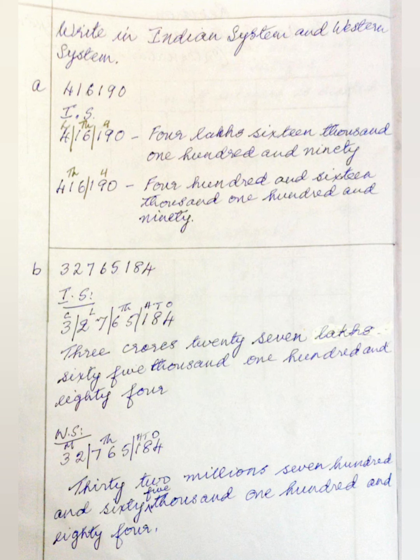We will write numbers in the Indian system and Western system. The first number is 416190. In the Indian system, we mark it as: ones, tens, hundreds | thousands, ten thousands | lakhs. So it will be written as 4,16,190.